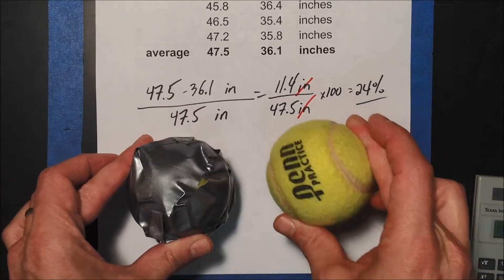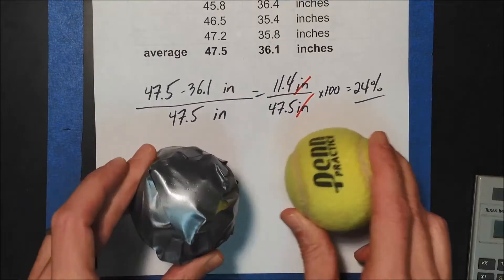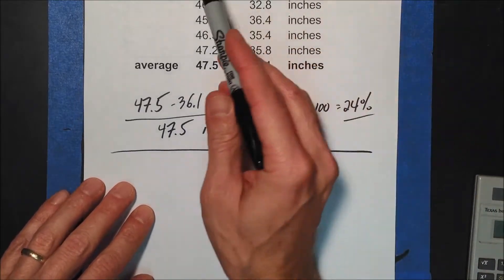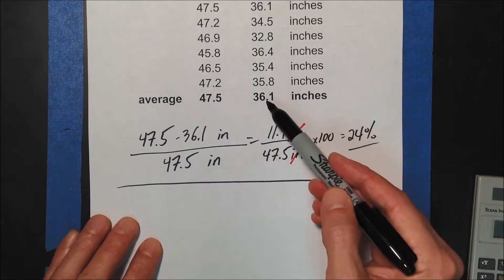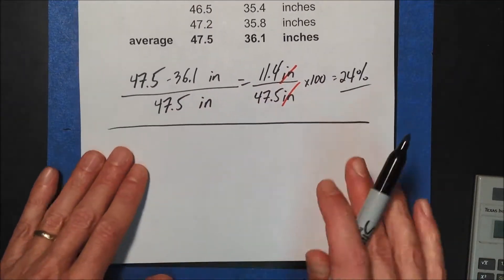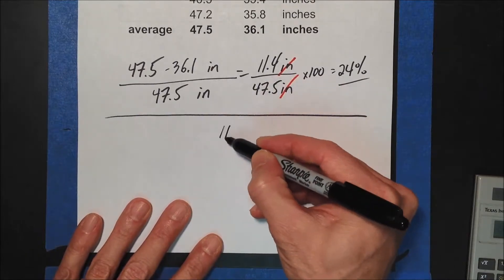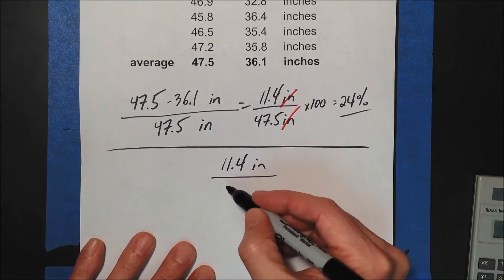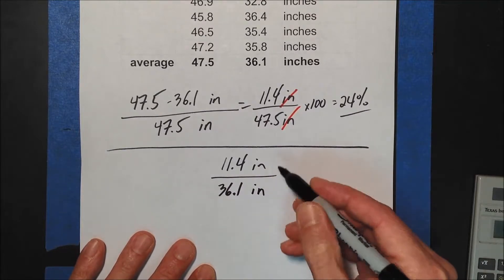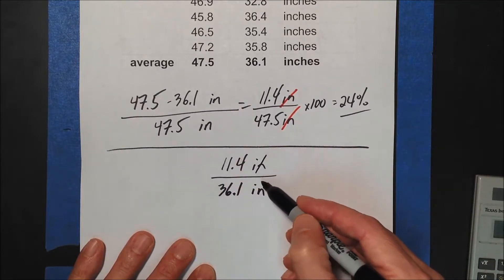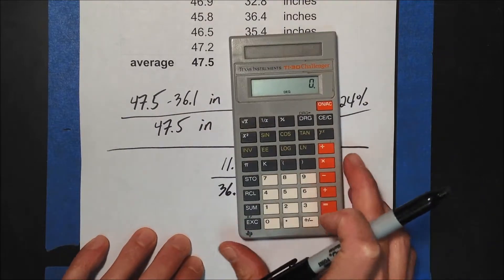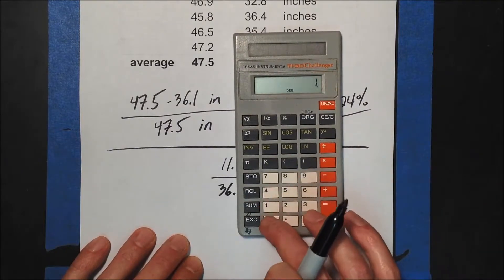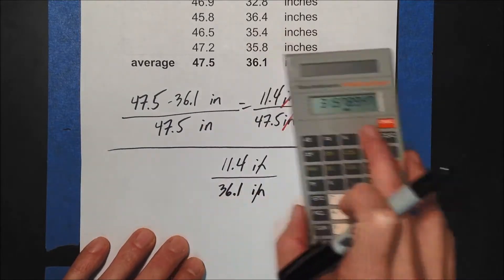Now note again — with our duct tape ball and our normal tennis ball, there's another way this could be done, and you have to be careful not to mix these up. If you want to compare the normal tennis ball to the one with the duct tape, you would put the duct tape ball's value on the bottom. The difference would still be 11.4 inches, but now you're comparing it to the duct tape ball, so you use 36.1 on the bottom — a smaller denominator — and you're going to get a different number. The inches cancel out, and 11.4 divided by 36.1, times 100, gives you — I'll round it to 31.6%.